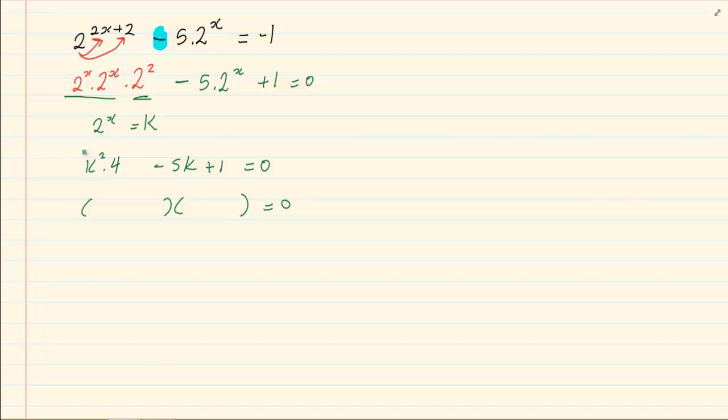Right, so we have 4k² plus 1 equals 0. So we factorize the trinomial, we get 4k minus 1, k minus 1 equals 0. Leaving us with 4k equals 1 and k equals 1.